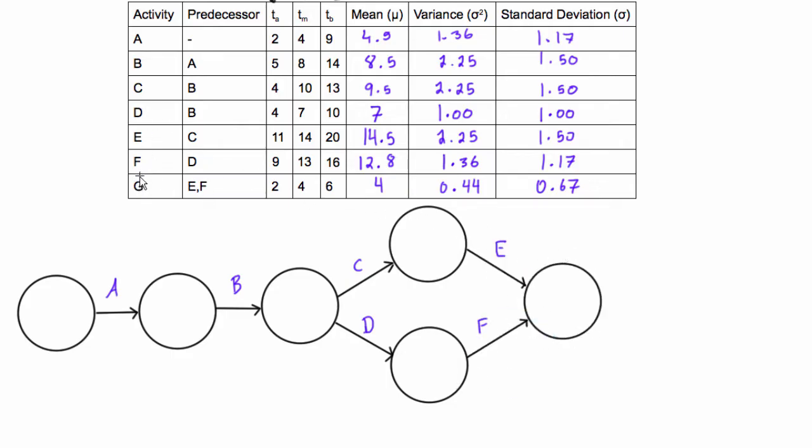So then we can put in activity G coming right off of this, depending on E and F, and we can finish off the network diagram. The last thing we need to do for a CPM network diagram is just come through and label all of the nodes so that each arrow points from a lower number to a higher number. So we get 1, 2, 3, 4, 5, 6, and then we'd finish off with 7.